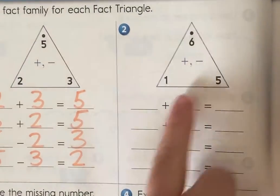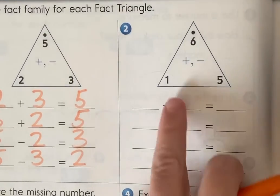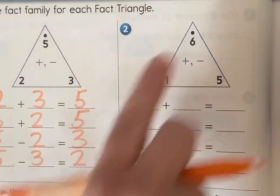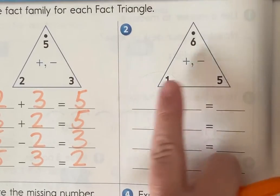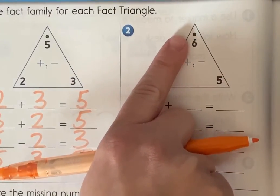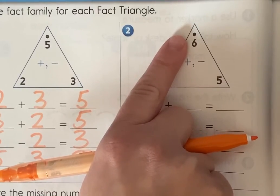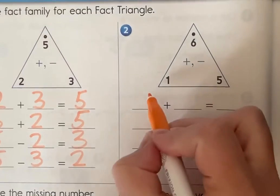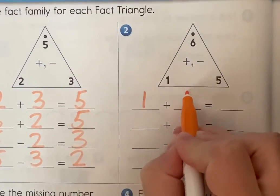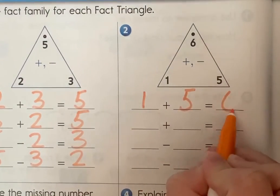We have the numbers one, five, and six. The two numbers at the bottom are the smaller numbers and we can add those to get our sum or our biggest number at the top and that's six. So I like to start with my smallest number when I'm writing mine just to keep it organized. So one plus five equals six.